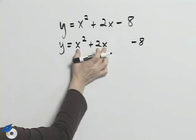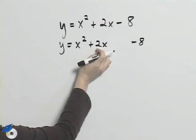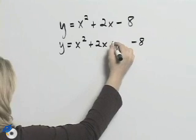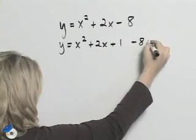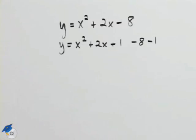We're going to complete the square. Here we'll take half of 2 which is 1. 1 squared is 1 so we'll add 1. Now if we add 1 to that side we have to subtract 1 so that it's equivalent to adding 0.